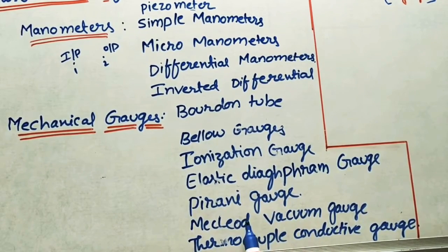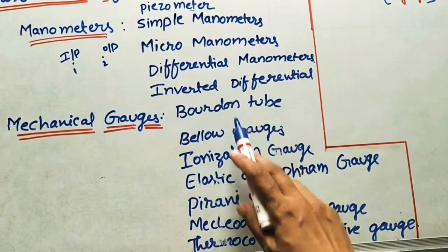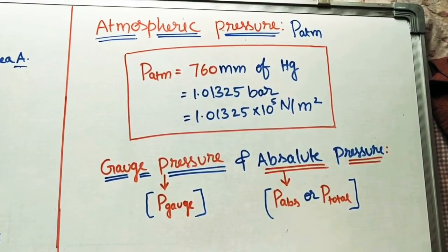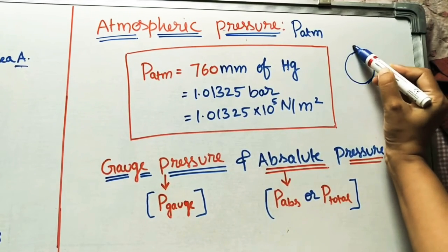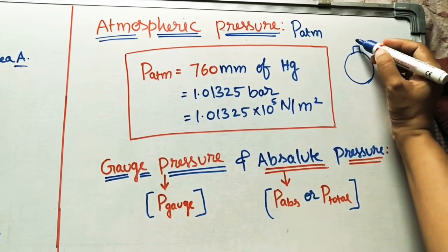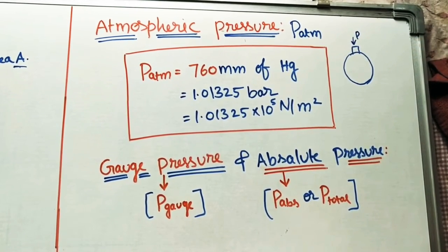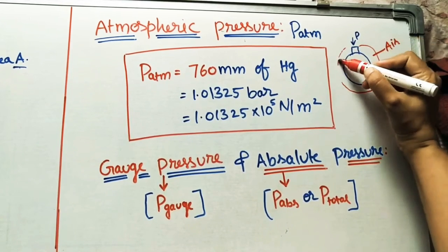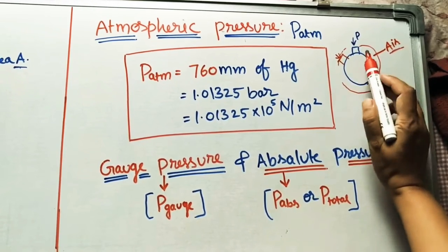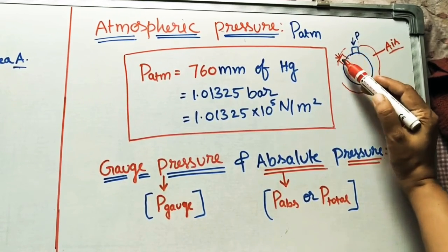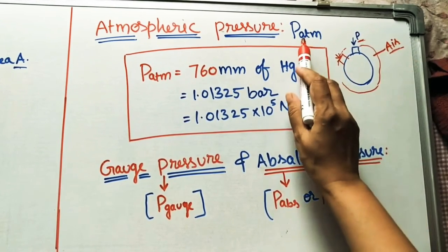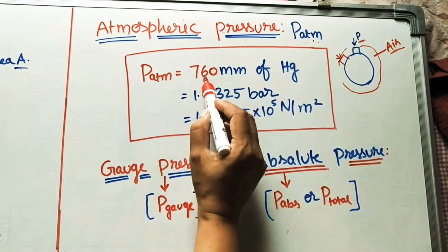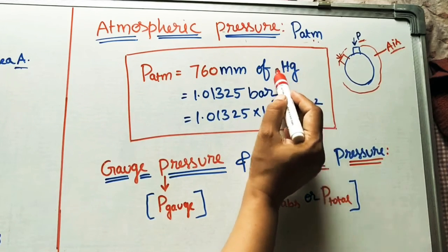In thermodynamics we are not studying all these gauges in detail. Atmospheric pressure is the pressure that occurs because of the atmosphere. On the earth's surface, every object is subjected to pressure because of the surrounding air layer. Wherever you place an object, it is subjected to the pressure of the air — this is called atmospheric pressure. It is constant for all objects, and we use the symbol P_atm.